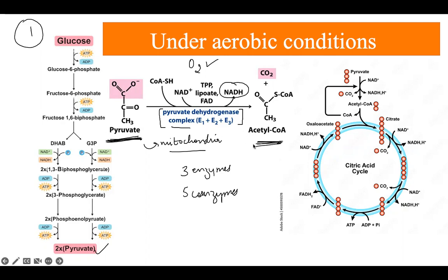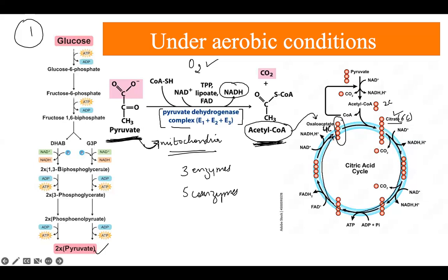Due to the production of acetyl-CoA, this acetyl-CoA now fuses with another molecule inside the mitochondria to form citrate. To summarize: after formation of pyruvate, it enters the mitochondria where it is converted into acetyl-CoA, which then fuses with a four-carbon molecule. Acetyl-CoA consists of two carbons and the four-carbon molecule consists of four carbons; when these fuse, a six-carbon molecule — citrate — is formed.